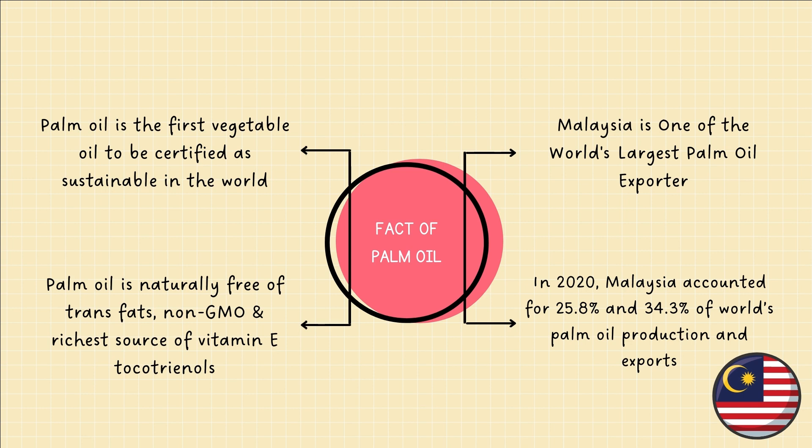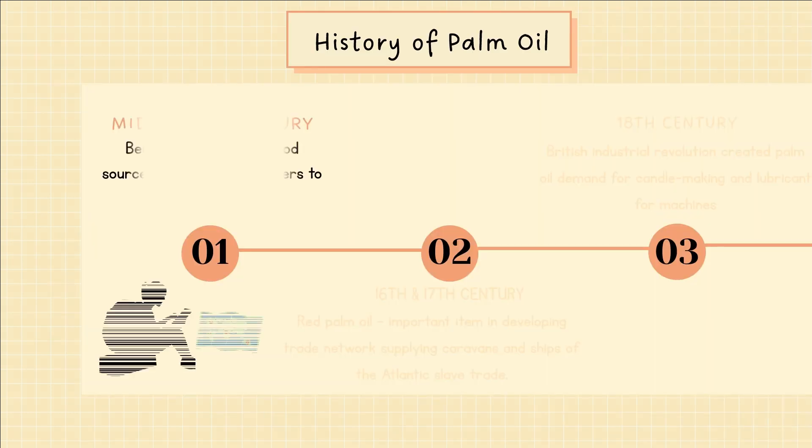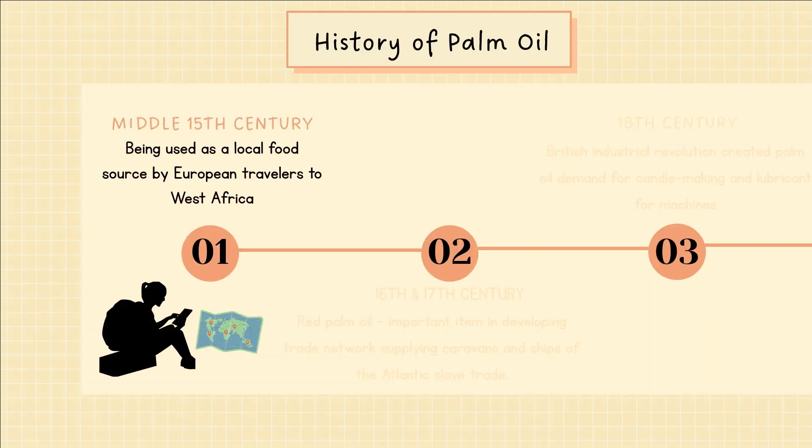Malaysia is one of the world's largest palm oil exporters, and in 2020, Malaysia accounted for 25.8% and 34.3% of the world's palm oil production and exports. Now we move to the history of palm oil.